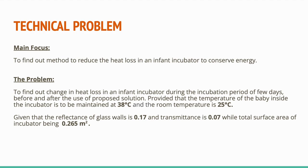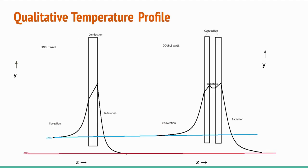Our problem statement was to find the change in heat loss in an infant incubator during the incubation period, before and after the use of the proposed solution — double wall incubators — provided that the temperature inside the incubator is to be maintained at 38°C and the room temperature is 25°C. Given that the reflectance of glass walls is 0.17 and transmittance is 0.07, with the total surface area of the incubator being 0.265 m². Using the same coordinate system, we can observe the temperature variation in 2D, with two temperature profiles for the two cases: single wall and double wall. We can see the modes of heat transfer like convection at the surface of air, conduction in the wall, and radiation in the temperature profile.